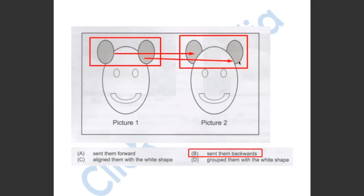As you can see, to make picture 1 into picture 2, they sent the shaded shapes backwards. So the answer has to be B.